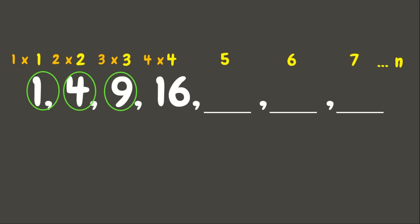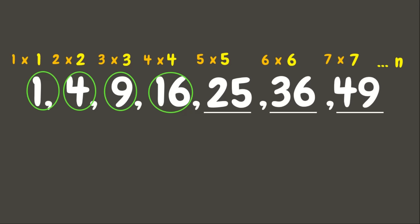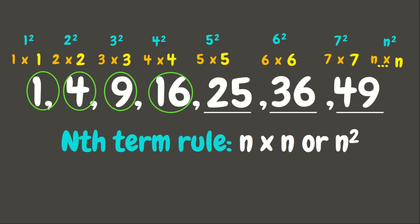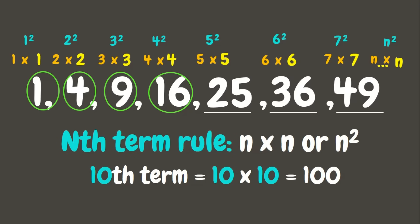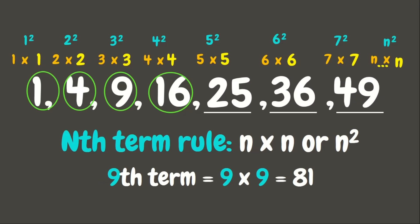Continuing the pattern: 3×3=9, 4×4=16, 5×5=25, 6×6=36, 7×7=49. To get the nth term, we multiply n by itself. We can see that squaring the counting numbers gives us the value of each term. Therefore our nth term rule is n×n, or n squared. So the 10th term is 10×10=100, and the 9th term is 9×9=81.